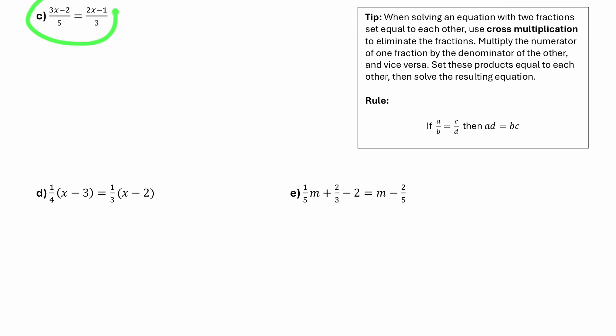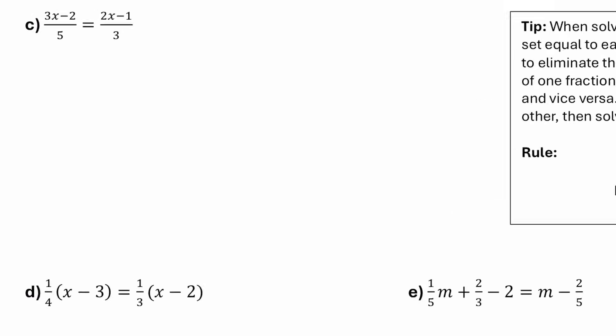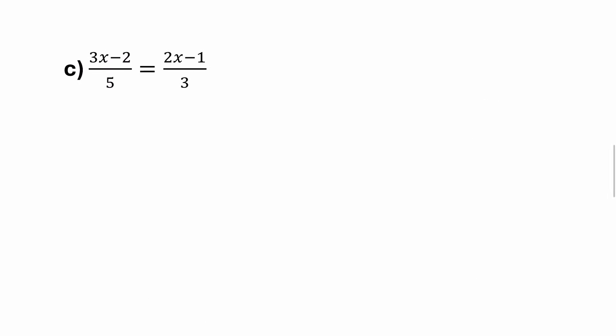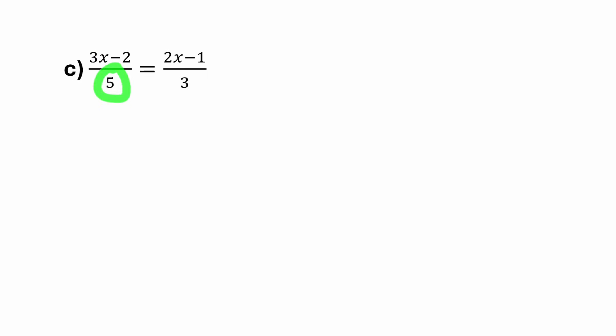In part C, we have two fractions — a fraction equal to a fraction. There's a shortcut for this called cross multiplication. But before showing that shortcut, let's do this question the normal way: look at both denominators and get rid of those fractions by multiplying both sides of the equation by a common denominator. The lowest common multiple between 5 and 3 is 15.